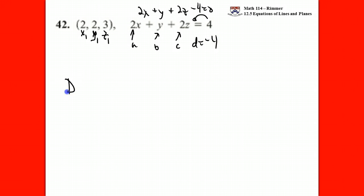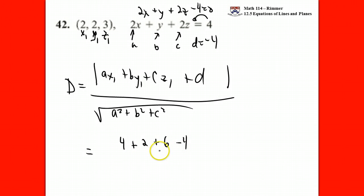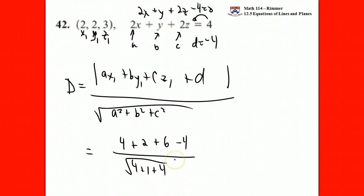Our formula for the distance is the absolute value of a times x1 plus b times y1 plus c times z1 plus d, all divided by the square root of a squared plus b squared plus c squared. Numerator-wise, we get 4 plus 2 plus 6 minus 4, which is positive so we don't need to worry about the absolute value bars. The denominator is the magnitude of n: 4 plus 1 plus 4 under a root, which is root 9, equal to 3. The numerator is 12 minus 4 = 8, so the distance is 8 thirds.